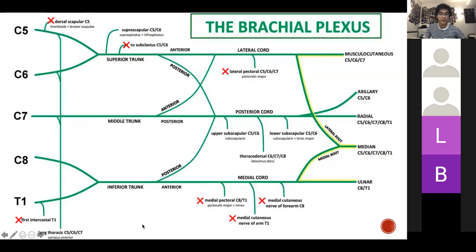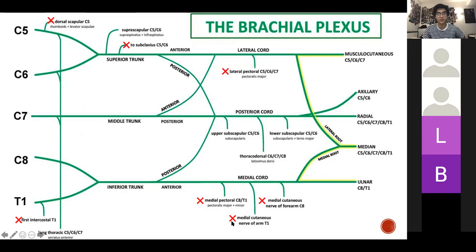So the brachial plexus — you probably do need to learn this if you haven't already. You don't need to learn all the little subsections. Things like your dorsal scapula nerve and the nerve to subclavius are not going to be very important. What's important to remember are the roots, the trunks, how the divisions work, the cords, and the branches. The mnemonic is 'Roger Taylor drinks cold beer' — roots, trunks, divisions, cords, branches.